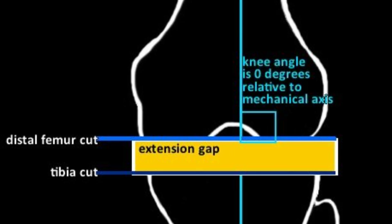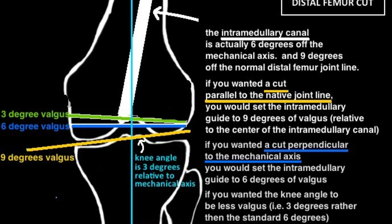If bone cuts are done correctly — 0 degrees for the tibia and 6 degrees for the femur — the tibia and distal femoral cuts should be parallel, forming a nice rectangle and indicating a balanced extension gap. If the gap is trapezoidal, it indicates soft tissue imbalance that requires adjustment.